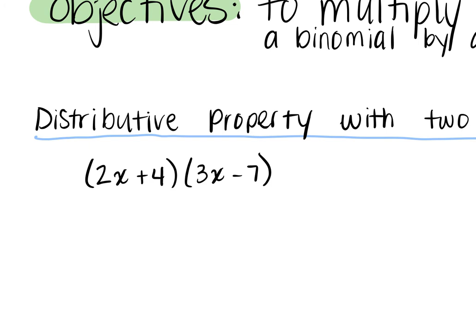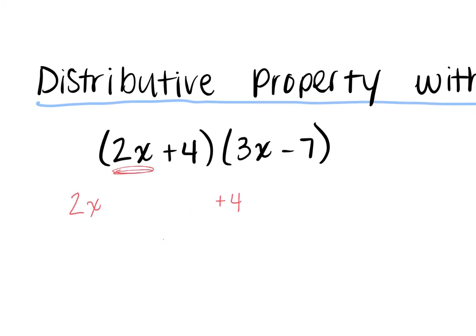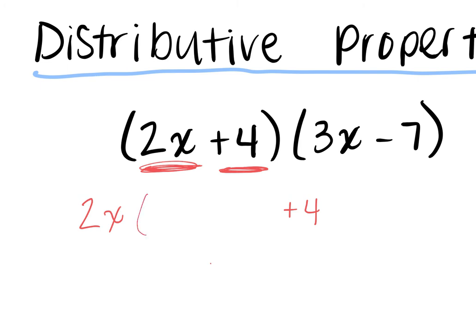All we do is we treat them as two monomials times a binomial. So what we're going to do is we're going to break this up and write the 2x over here and the plus 4 over here. The 2x came from the first term in the first parentheses and the 4 came as the second term in the first parentheses. Since they're both being multiplied by 3x minus 7, we fill in 3x minus 7 next to the 2x.